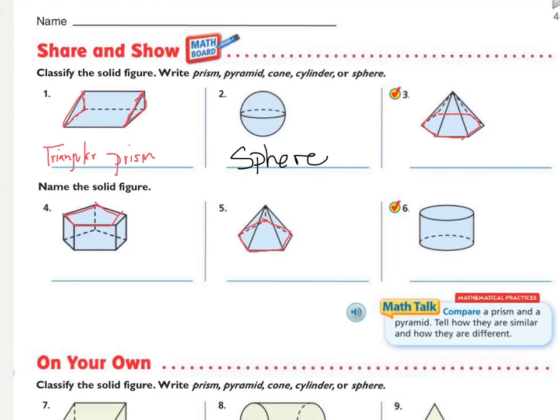Number three, I can see that there is one base and it comes to a point together. And the bottom shape right here has six sides. That makes this a hexagonal pyramid because it comes to a point.